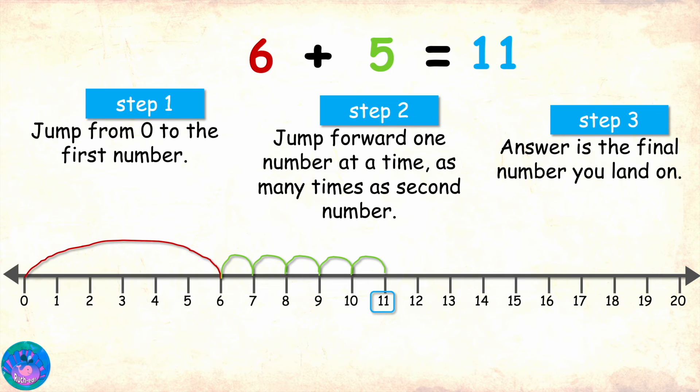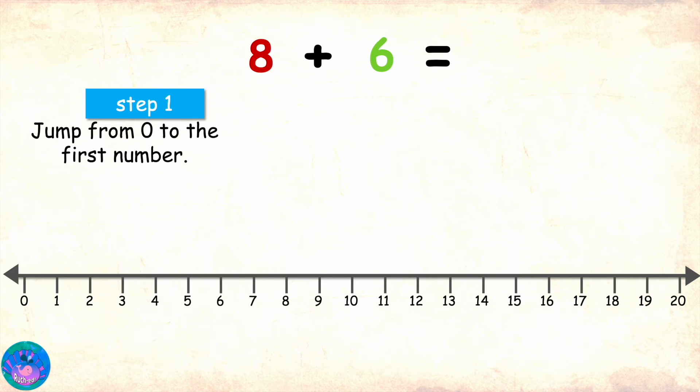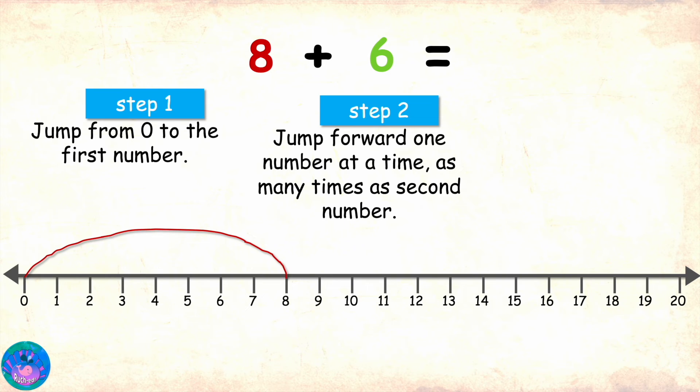Correct answer. Now, try solving 8 plus 6. First, the big jump from 0 to the first number 8. Here we go. Step 2 is to jump forward one number at a time as many times as the second number. Second number is 6.